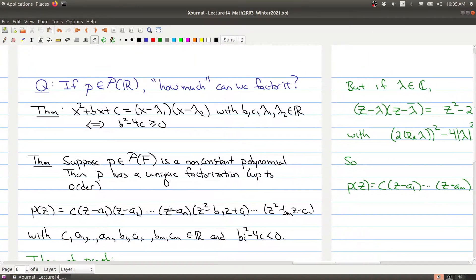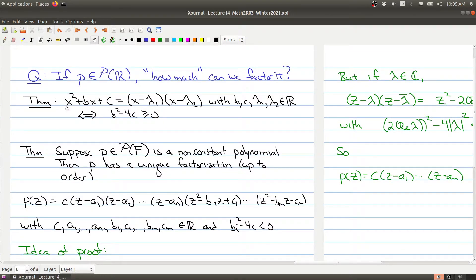First of all, we need a little result, and this should look familiar. The polynomial x² + bx + c can be factored into two polynomials of degree one if and only if b² - 4c is greater than or equal to zero. And of course, you know this from high school, you call this the discriminant. So we know exactly when we can take a polynomial degree two and break it into two polynomials of degree one.